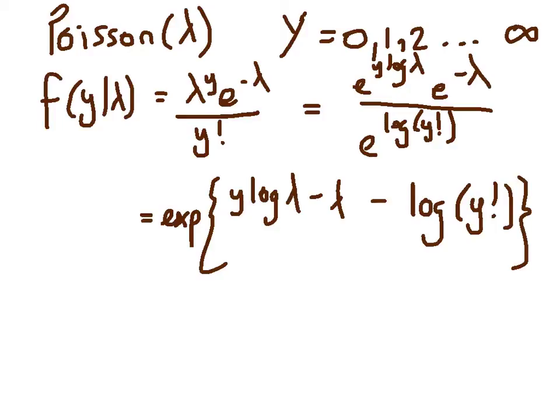The only thing we need to add in here is just to say we could, if we wanted, divide this by 1, and at that point we can see what's going on here. Here I have y theta, so this is telling us for the Poisson that theta is equal to log lambda.